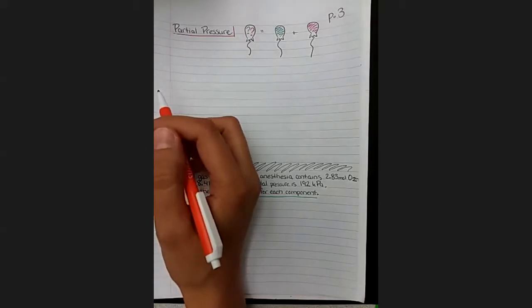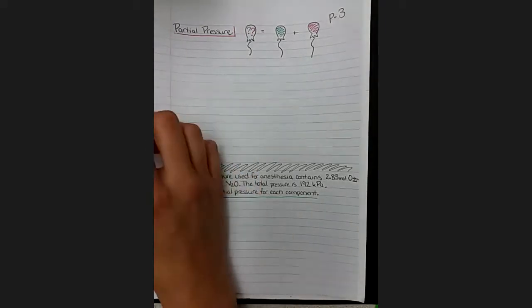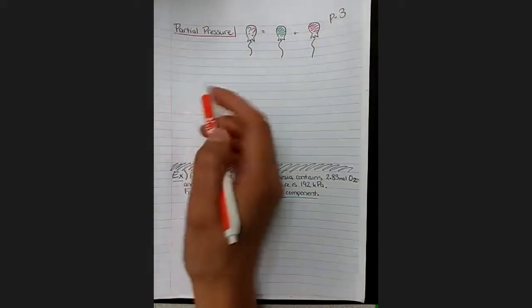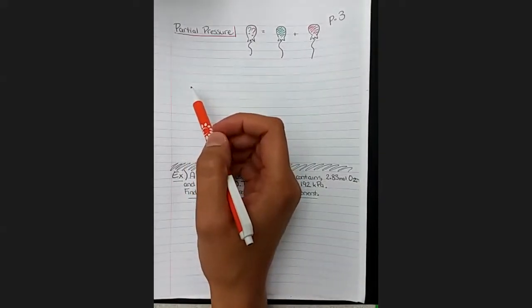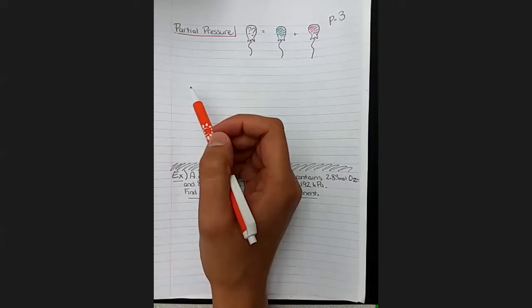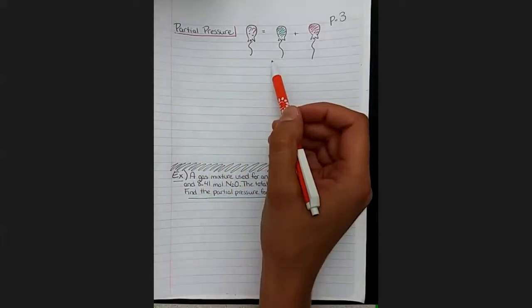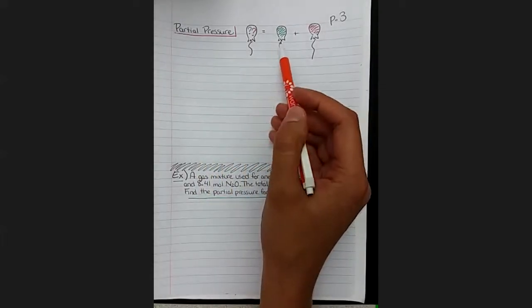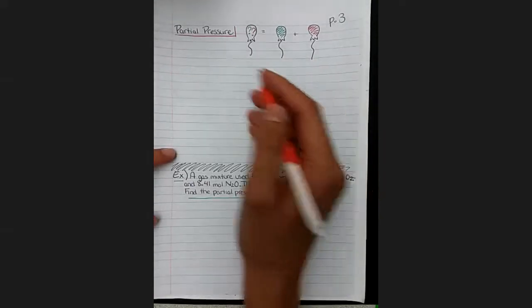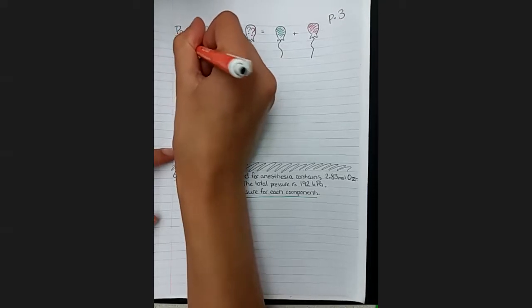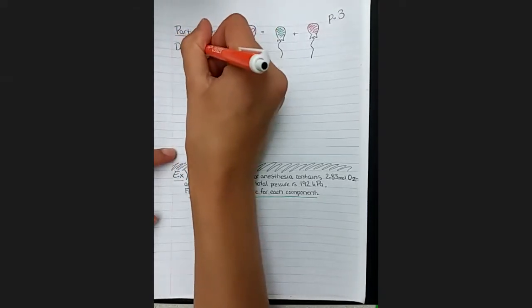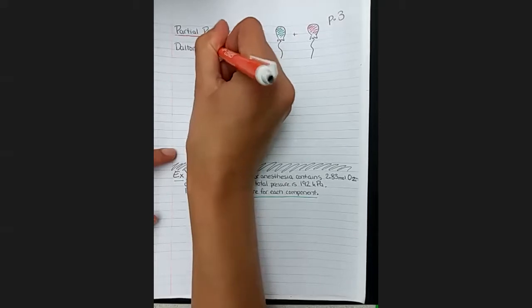In all of the previous discussions of gases, we've just talked about one pure gas in a balloon or container. But realistically, we don't come upon that very often. Most of the gases we interact with are a mixture of multiple kinds of gases. So there's an additional rule we need to be aware of so that we can properly calculate information about each of these different gases.